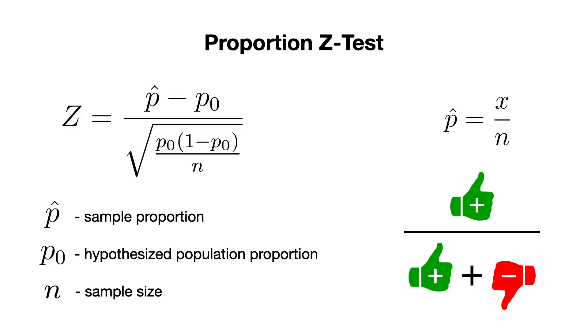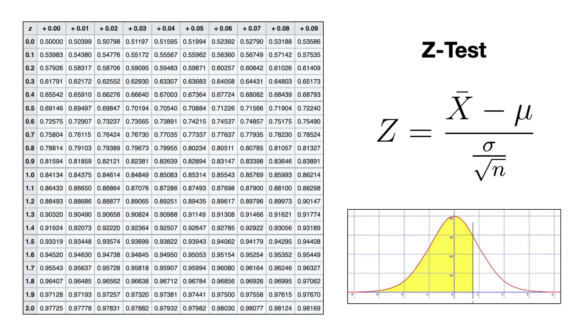If for the T-test we had the T-table, which helps us find critical values based on the degrees of freedom, for the Z-test, we use the Z-table to determine probabilities or critical values based on the Z-score. You start by calculating the Z-score using one of the formulas presented earlier in this video, and then you look up this Z-score in the table to find the cumulative probability under the standard normal curve.